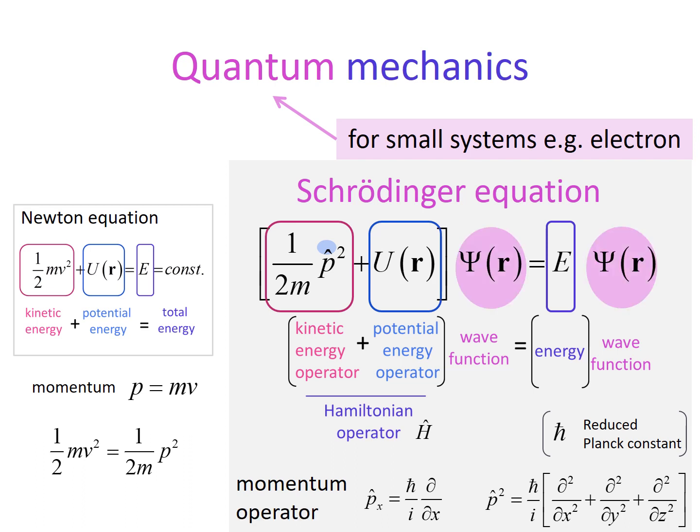The potential energy and total energy is similarly found, but you can find a big difference between Newton and Schrödinger equation here: psi r. This is called the wave function, and they are inserted on the left of both sides of the Newton equation.